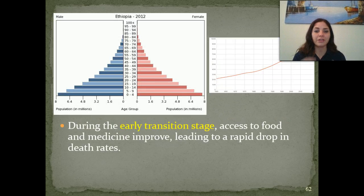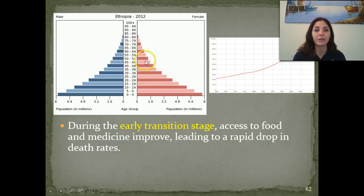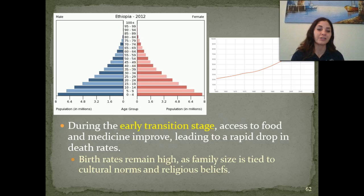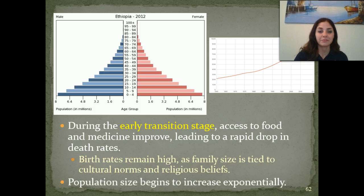Looking at Ethiopia during the early transition stage: access to food and medicine improves and leads to a rapid drop in death rates. We still see a bottom-up pyramid with a lot of births, but a drastic decrease in how many of those births result in someone living into their 60s or 70s. Birth rates remain high as family size is tied to cultural norms and religious beliefs — you have as many kids as you possibly can, because you don't know how many will survive, and many religious beliefs are against birth control. The population begins to increase exponentially.